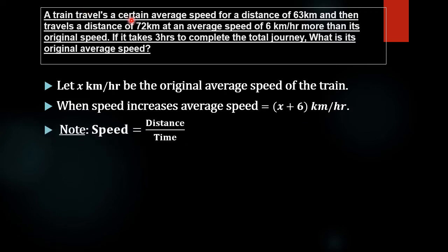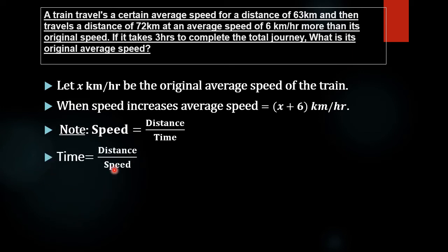Note the equation: speed equals distance divided by time. Rearranging, time becomes the numerator and speed becomes the denominator. The new equation is time equals distance divided by speed. We will use this to connect the two journeys.